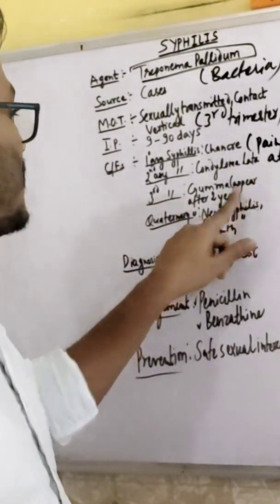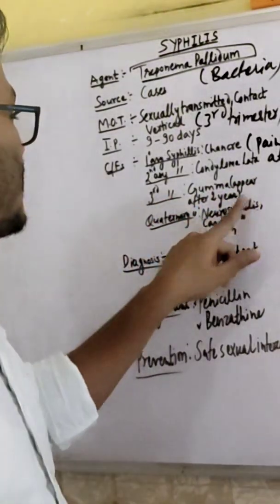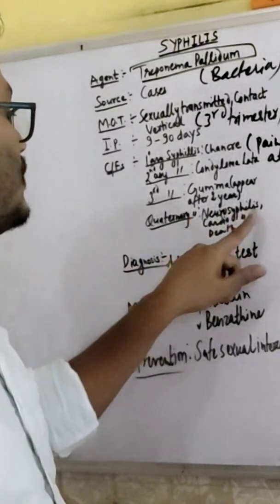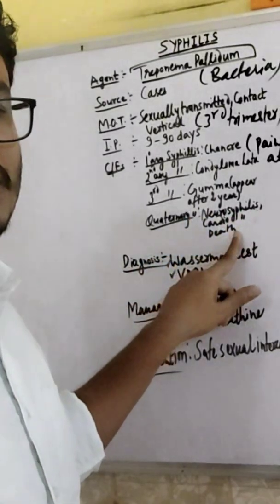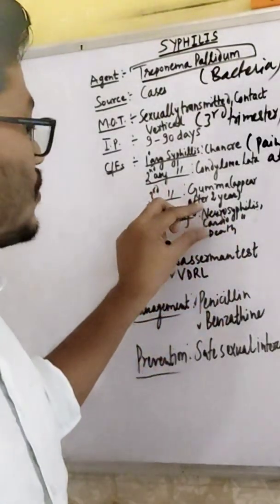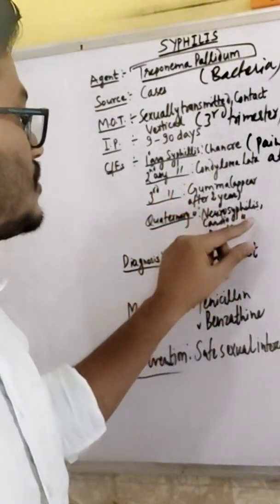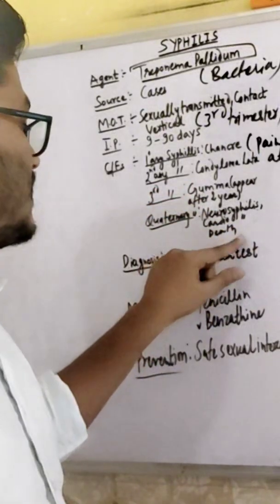Gumma appears after 2 years. In tertiary syphilis there is neurosyphilis and cardiosyphilis. These are the main complications of syphilis.